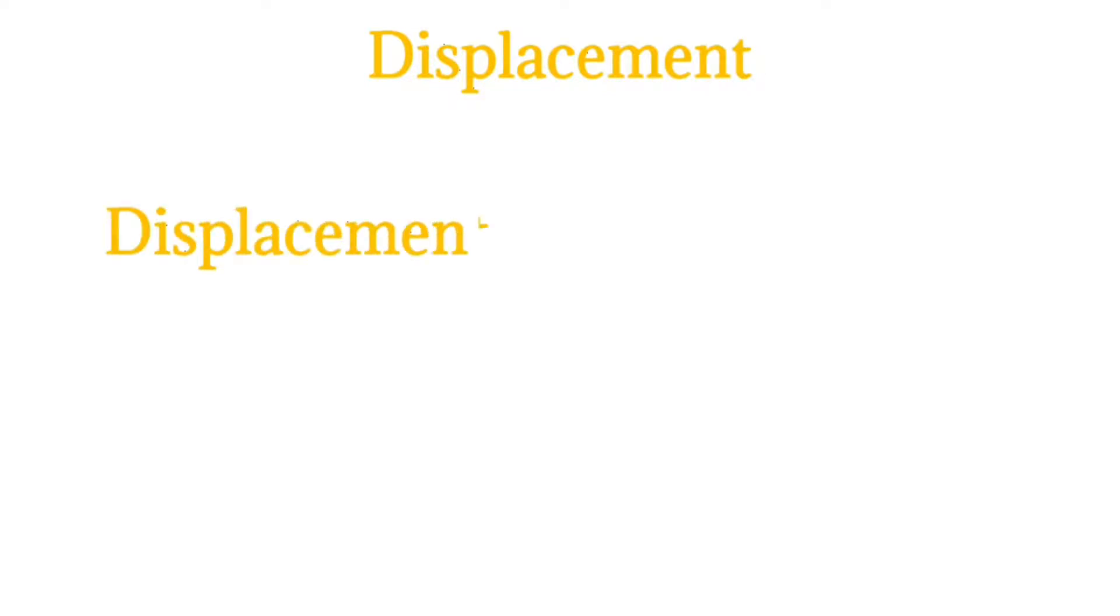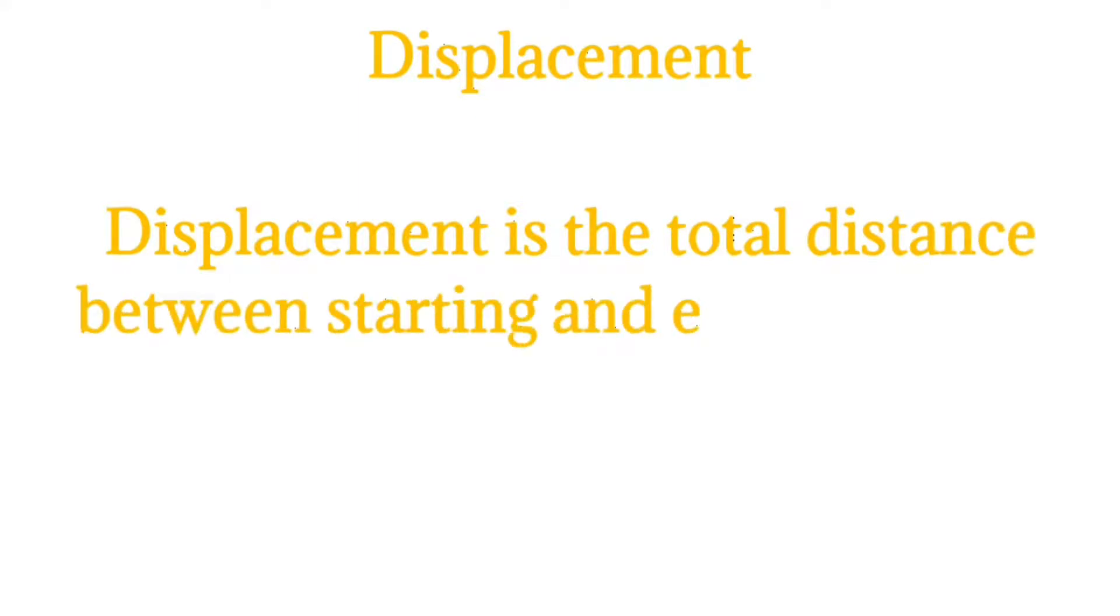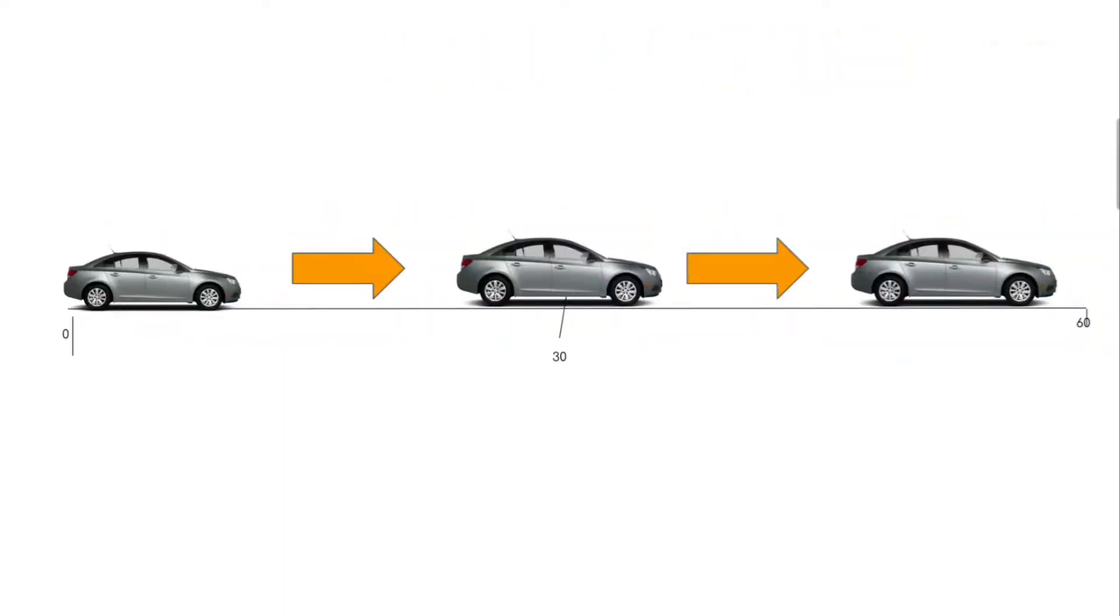Displacement: Displacement is the total distance between beginning and ending point. Let me explain - displacement is the total distance between starting and ending point. Consider this car has moved from its starting point to ending point, traveling 60 km.